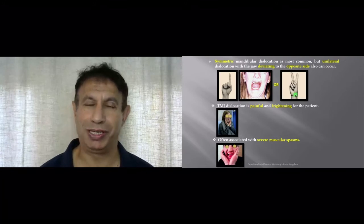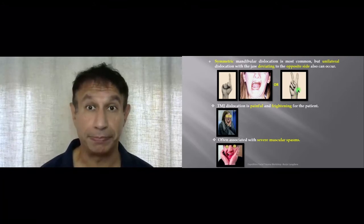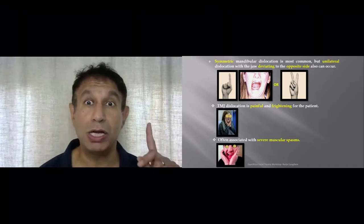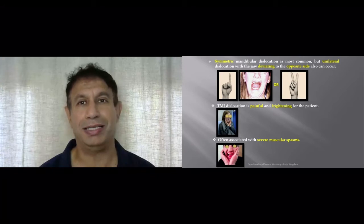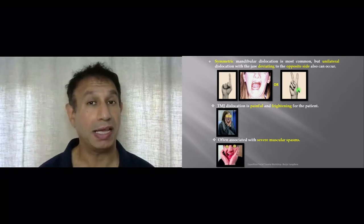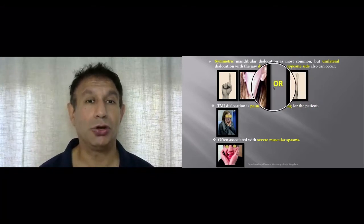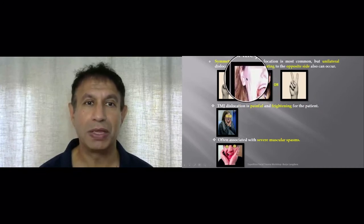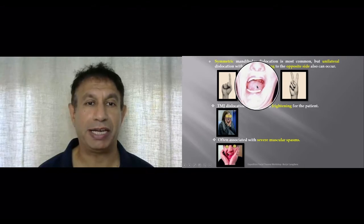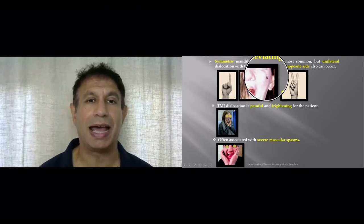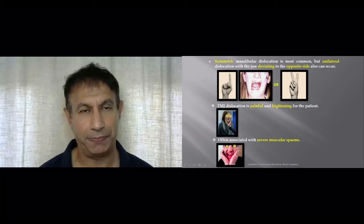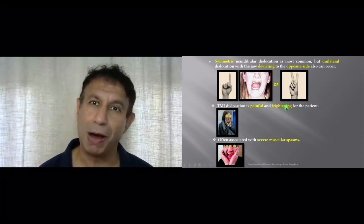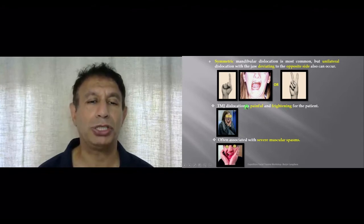Normally, both the jaw joints dislocate at the same time. However, you may have the situation where one jaw joint has dislocated and one is in the normal position. In this situation, the jaw will deviate to the normal side. So if the jaw is deviating to the right hand side, the right is normal and the left is dislocated. The patient is frightened because she cannot close her mouth and is in excruciating pain.